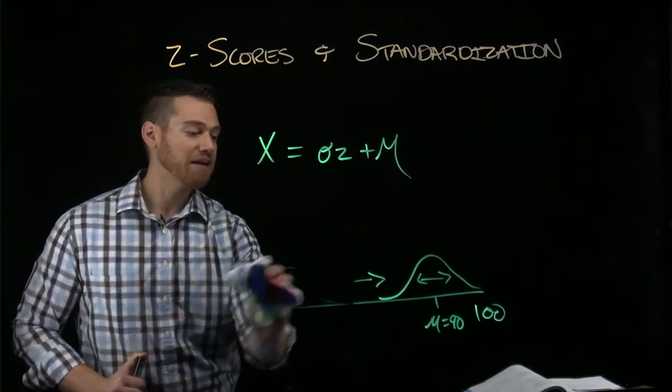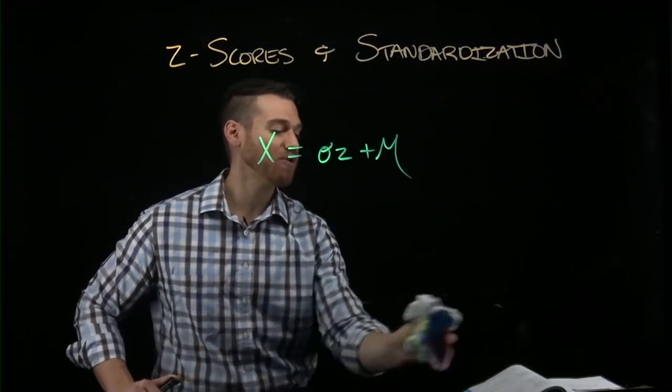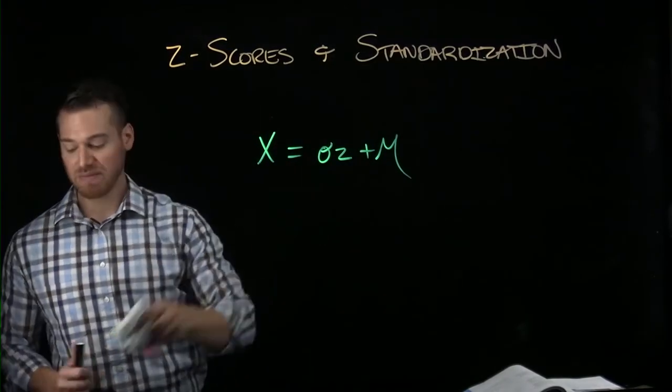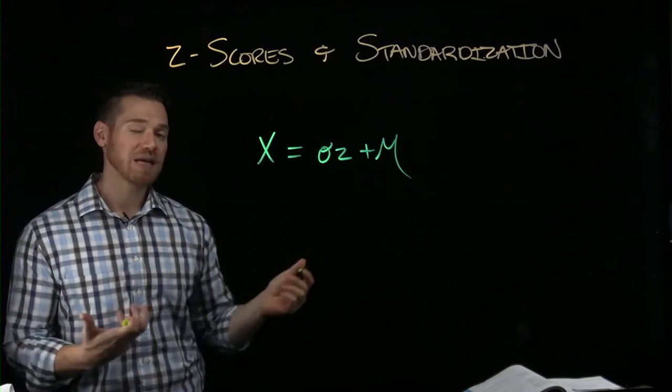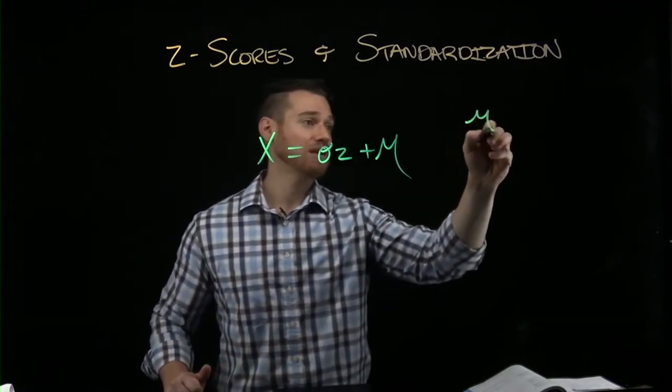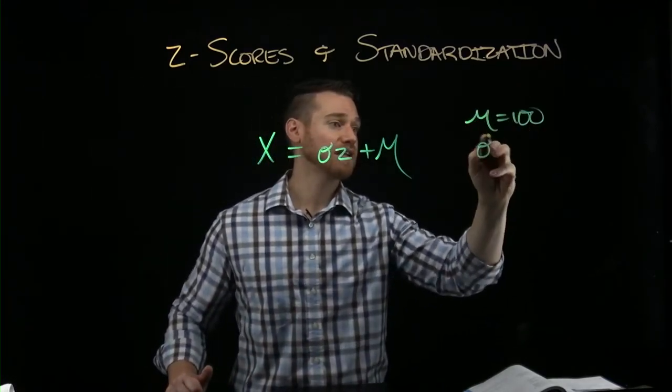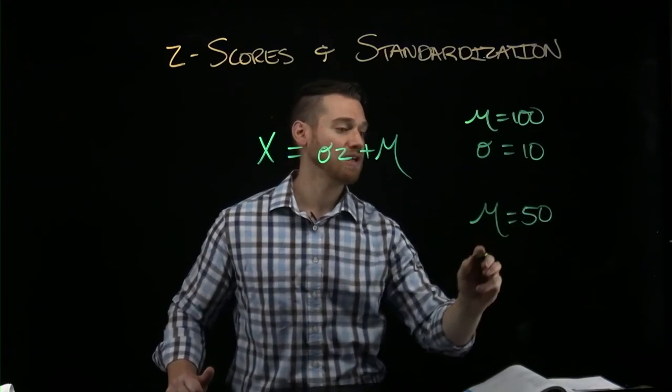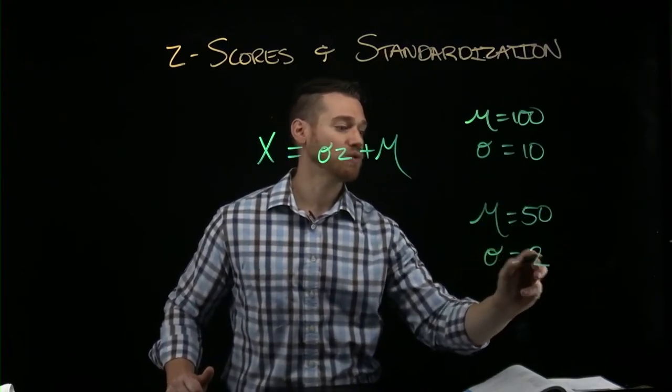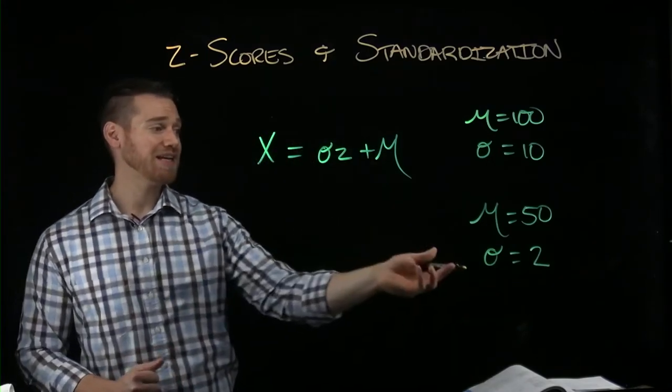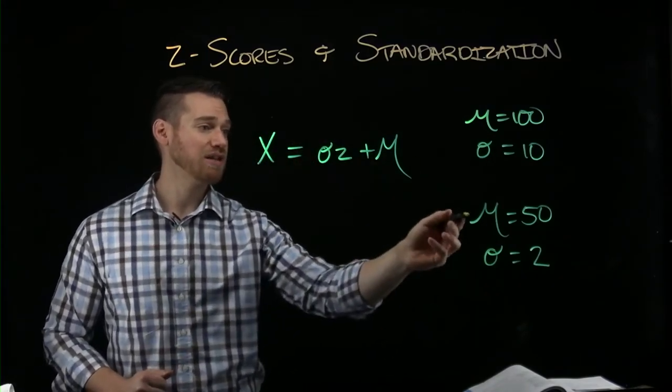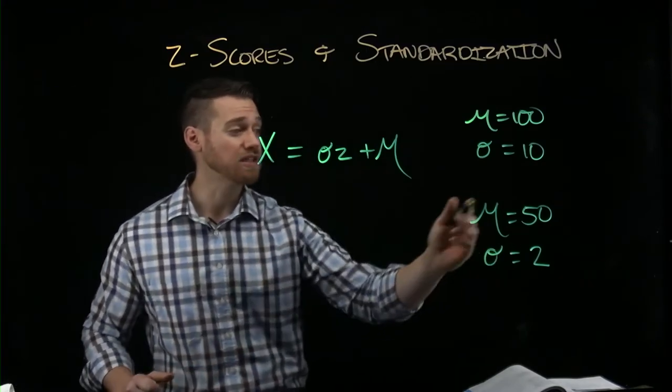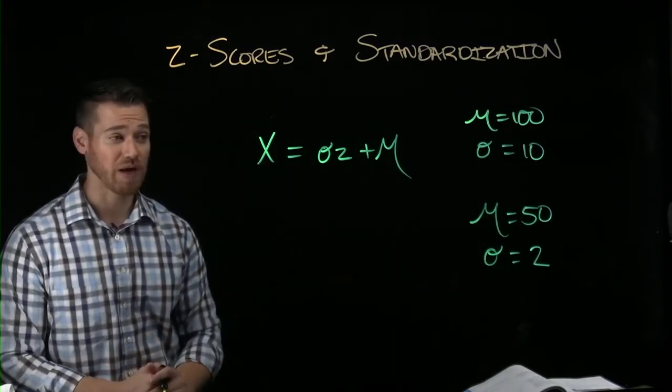So we can do that by picking what values we want the mean and standard deviation to reflect and we can impute them into this. So if we say we had an original distribution that had a mean of 100 and a standard deviation of 10, but we now want the distribution to have a mean of 50 and a standard deviation of two, we can do that by taking the Z scores and using this information to obtain our new X scores, which tells us what the raw score would be if the distribution was summarized in this way.